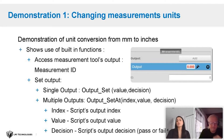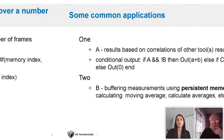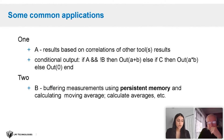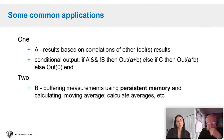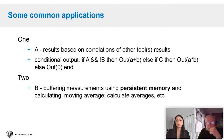So we went over the two examples, and now we'll talk a little about some of the common applications. You can use arithmetic operators to produce outputs. You can also output results based on correlation of multiple measurement tools. You can use logical operators to produce conditional outputs. You can also use persistent memory to store values to calculate results from a tool over time.